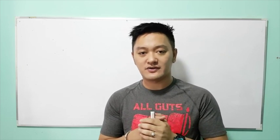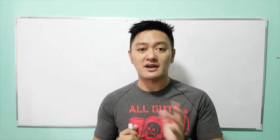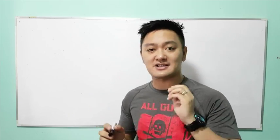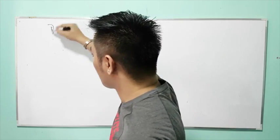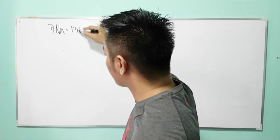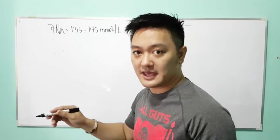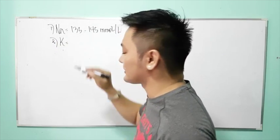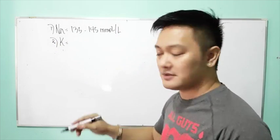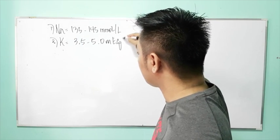In your examination, familiarize yourself with common electrolytes and their normal values. The first is sodium, with a normal level ranging from 135 to 145 millimoles per liter. The second electrolyte is potassium, with a normal level ranging from 3.5 to 5.0 milliequivalents per liter.